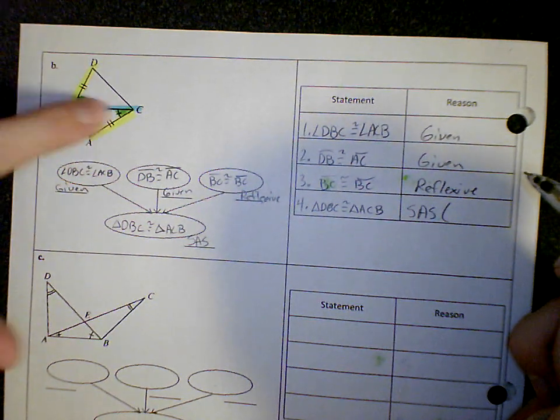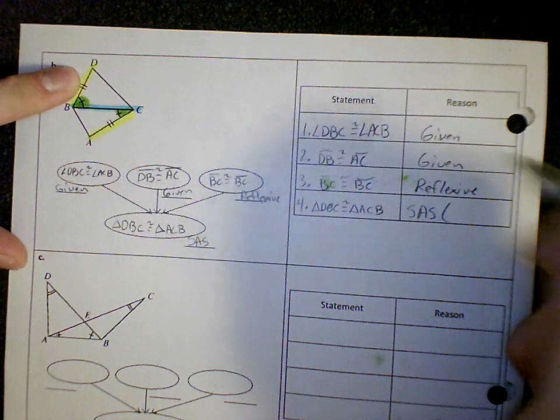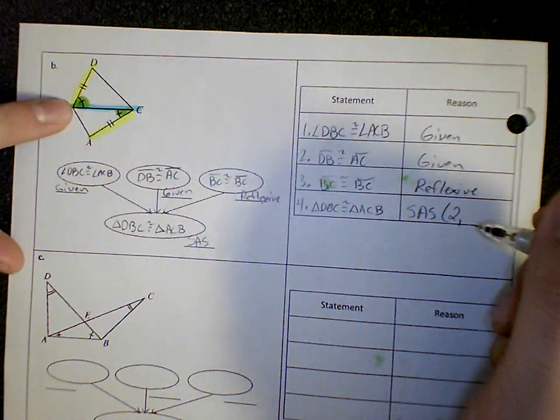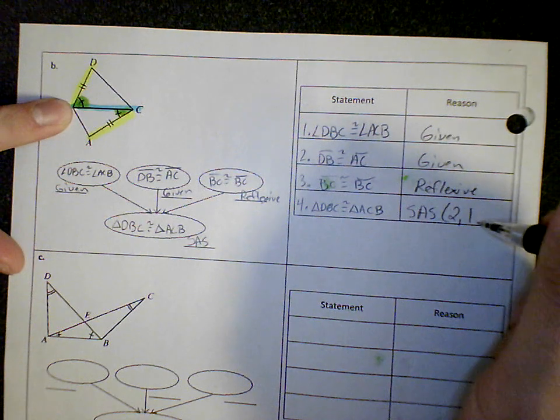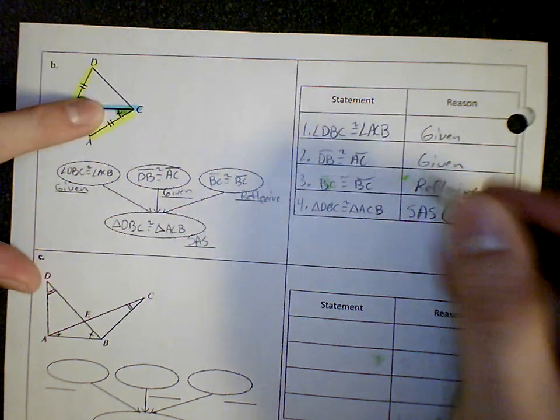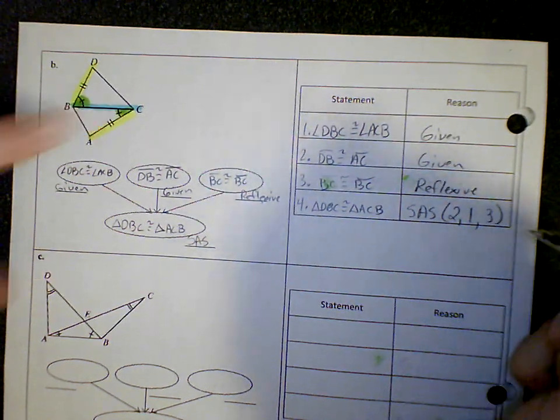So yellow is step two. The green angle was step one. And the blue side was step three. So two, one, and three.